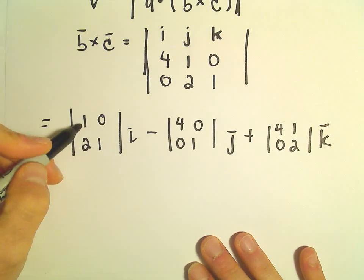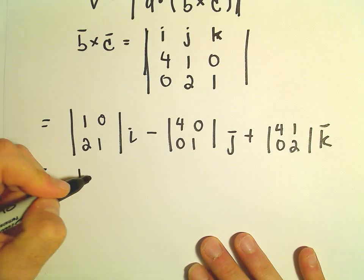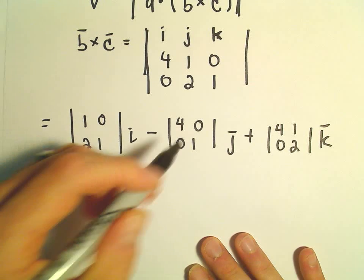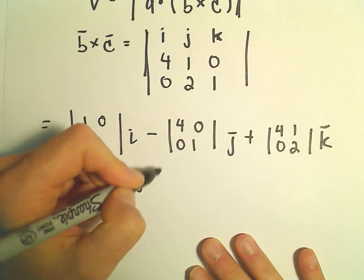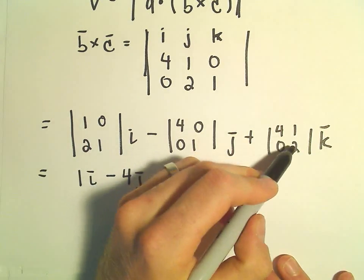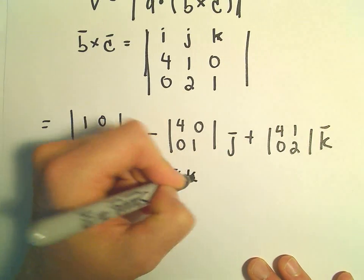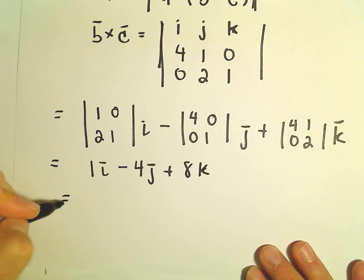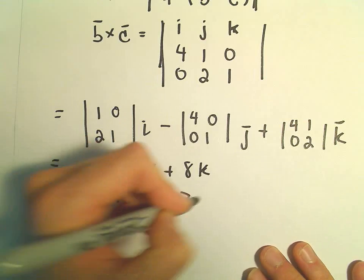And then the k component: we'll have 4, 1, 0, 2. When we simplify, we'll have 1 times 1 minus 2 times 0, that's 1i. Minus 4 minus 0, so 4j. 4 times 2 is 8 minus 0, so 8k. B cross c has components <1, -4, 8>.